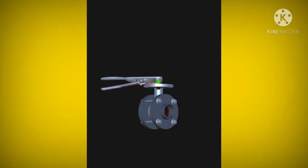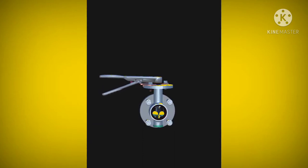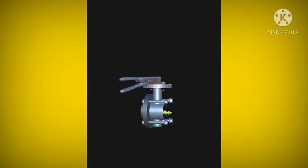A butterfly valve is a valve that isolates or regulates the flow of a fluid. This valve is a type of quarter turn valve. A quarter turn valve can open or close whenever the handle is turned 90 degrees. The main function of these valves is to control the flow of liquids through a section of pipe.